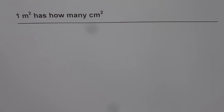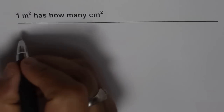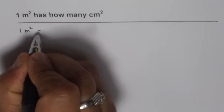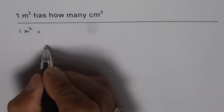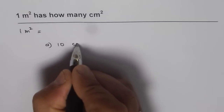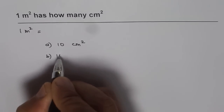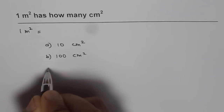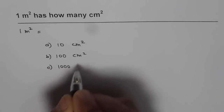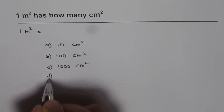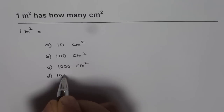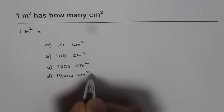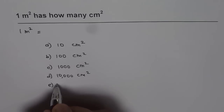One meter square has how many centimeter squares? I am Anil Kumar, and that is probably a very difficult question to answer. I can give you a few choices. One meter square is equal to: A. 10 centimeter square, B. 100 centimeter square, C. 1000 centimeter squares, D. 10,000 centimeter squares, or E. More than that.